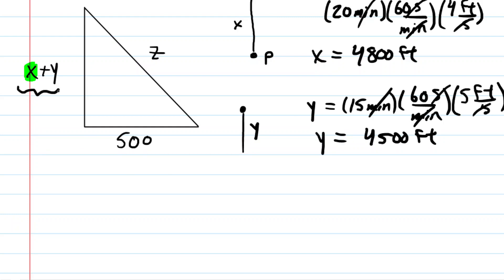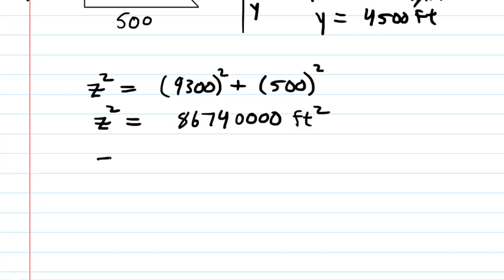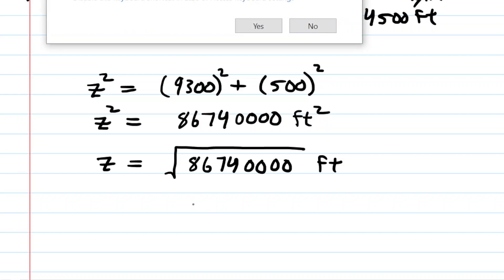So X plus Y, of course, if we add those together, we're going to get 9,300 feet. Now once we have that dimension, we can find Z by the Pythagorean theorem. So we plug the lengths into the Pythagorean theorem. You'd probably want to pick up a calculator here and simplify the right-hand side. And there you have it. And then you want to take the square root on both sides to solve for Z. So there is our value of Z.